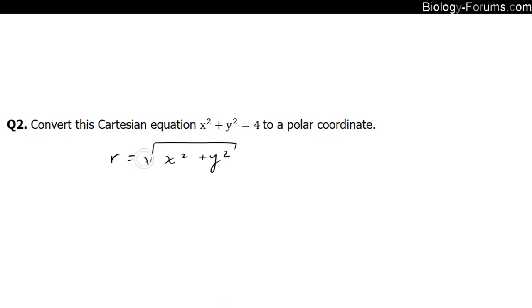We can get rid of that square root by squaring both sides. And if we do that, we end up with r squared equals x squared plus y squared.